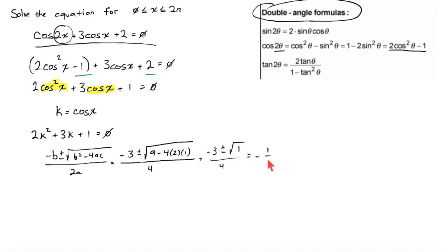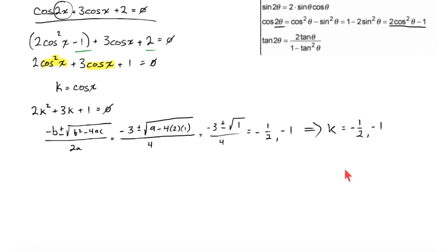And let's say you arrive at the conclusion that the solutions to that quadratic equation are negative one half and negative one. So k is equal to negative one half or it's equal to negative one.